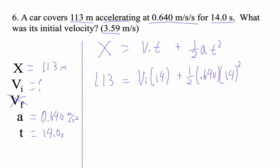Alright, now what we do is let's figure out what this term is here. So 0.5 times 0.64 times 14 squared is 62.72. We've got VI times 14.